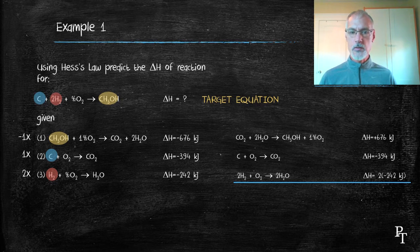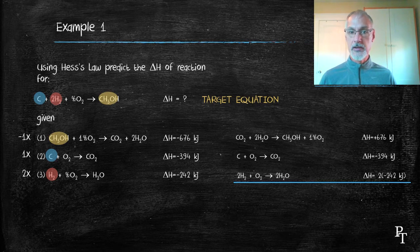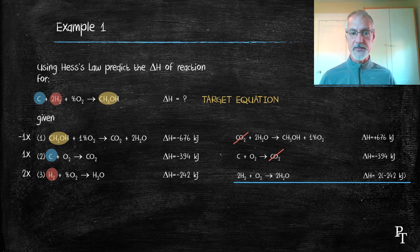Now, let's add these equations together to check that they add up to the target. To do that, I'm going to cancel out species that are common to both sides of the equation. So for instance, carbon dioxide is both a reactant and a product, so I can cancel them.